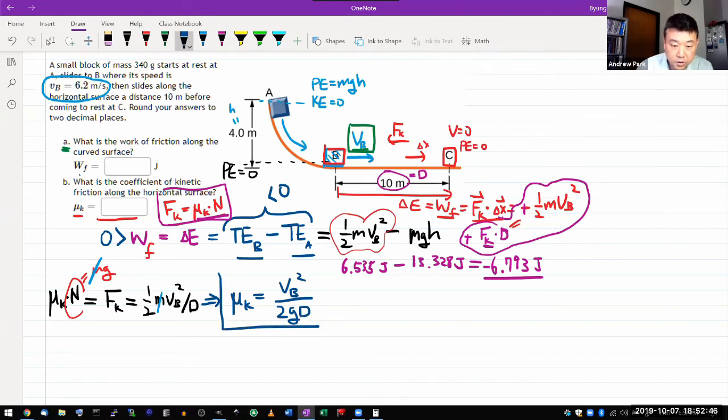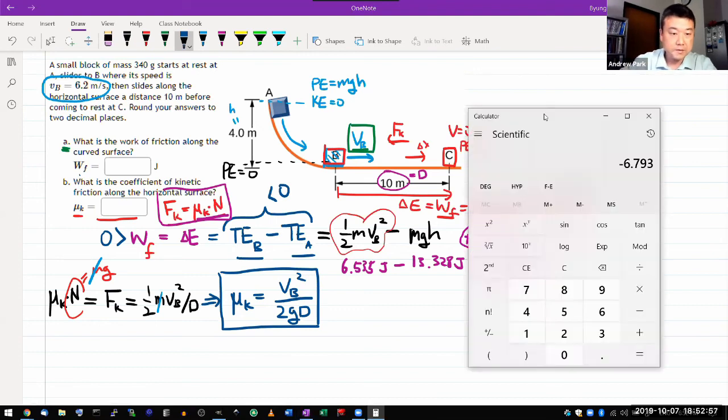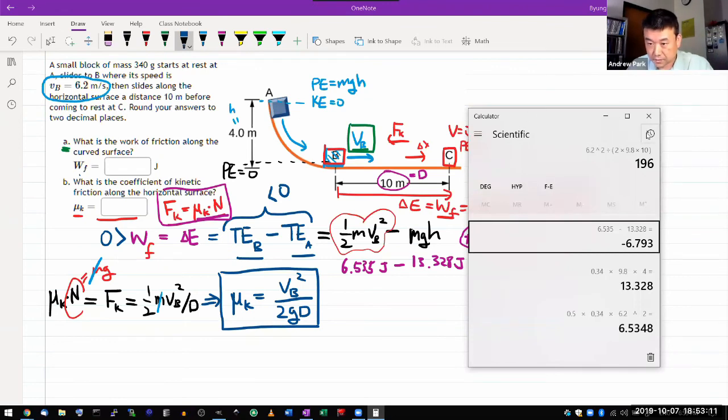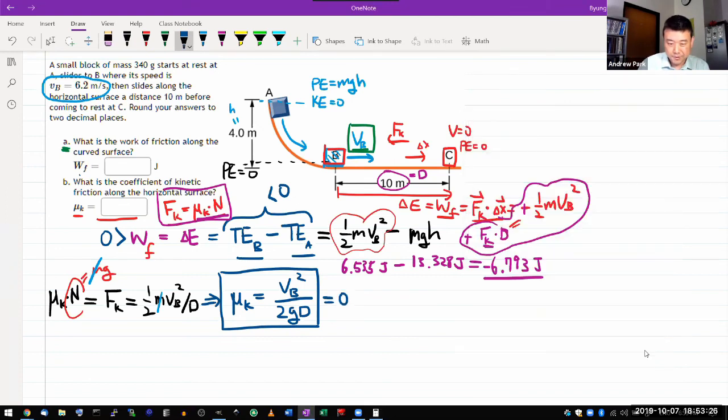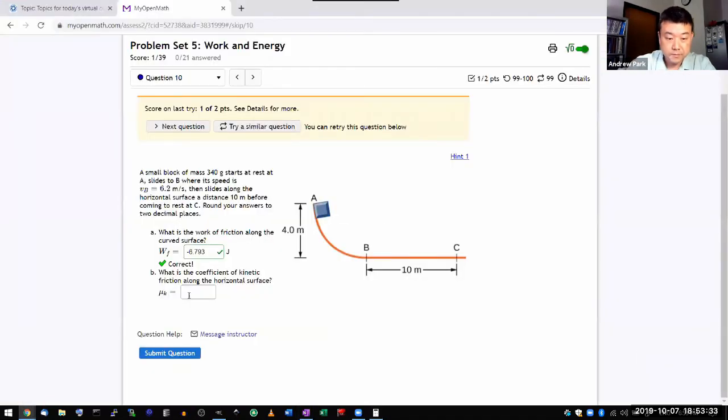And make sure that your units cancel out. I think I can see that units cancel out. You can check it on your own. So let me plug in those numbers and let's see what we get. VB, that's 6.2 squared divided by 2 times 9.8 times 10. I kept everything in SI units. So the units cancel out. Equal 0.196. It says two decimal places, but more decimal places never actually hurt. So this is equal to 0.196. Let's test it and see. 0.196. Good.